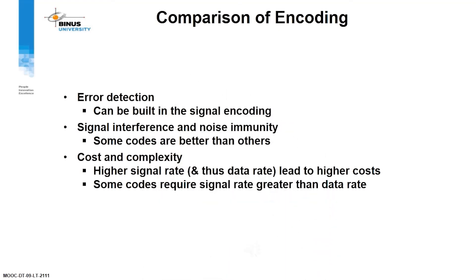Comparison of encoding continued: Error detection can be built into the signal encoding. Signal interference and noise immunity — some codes are better than others. Cost and complexity: a higher signal rate, and thus data rate, leads to higher cost. Some codes require a signal rate greater than the data rate.